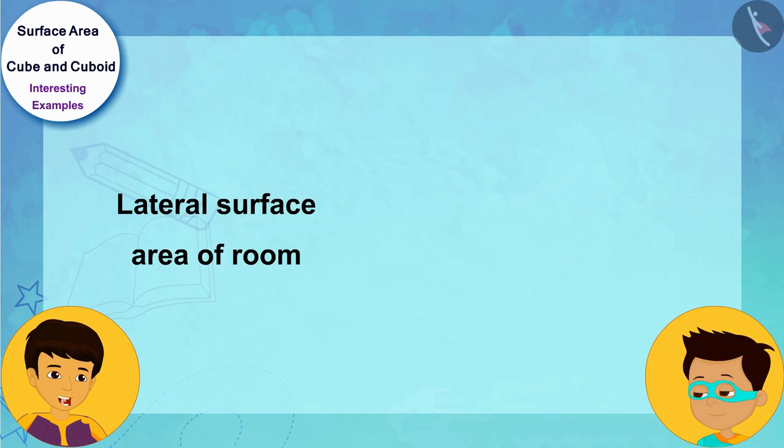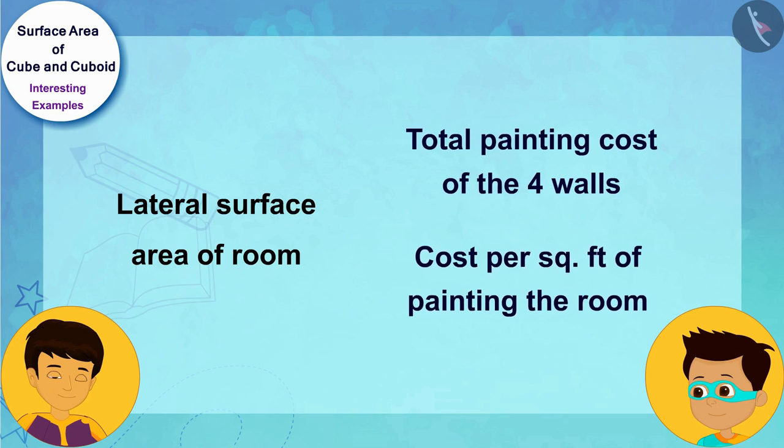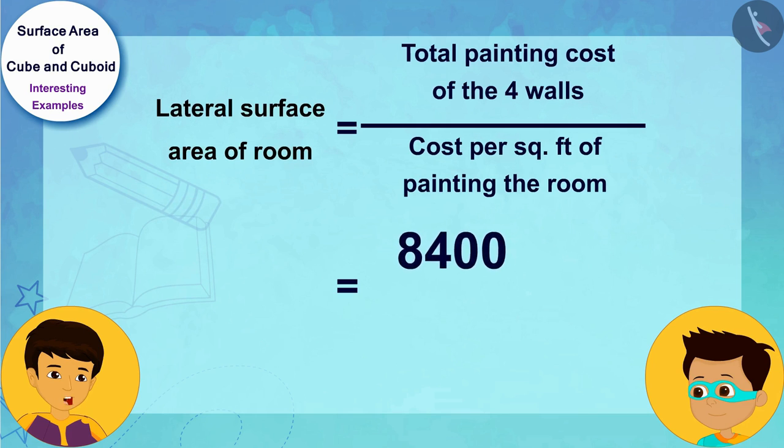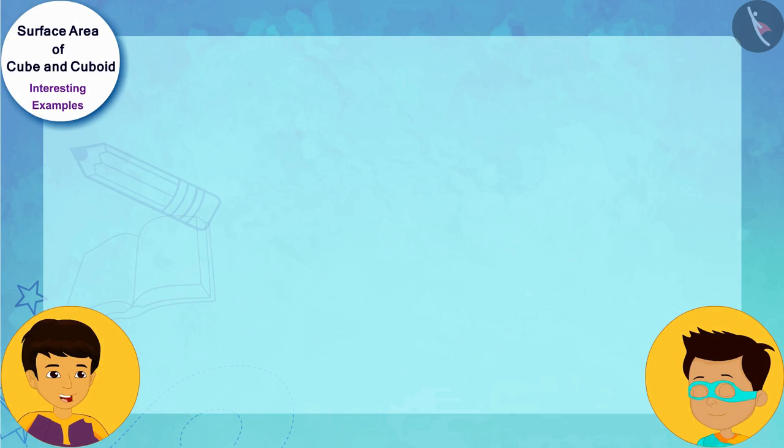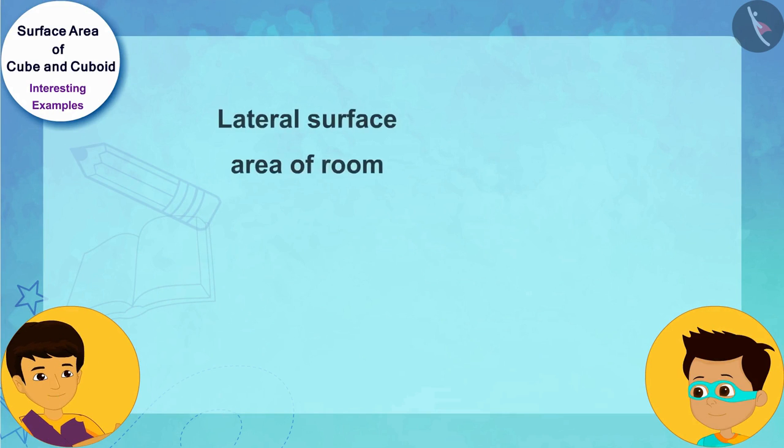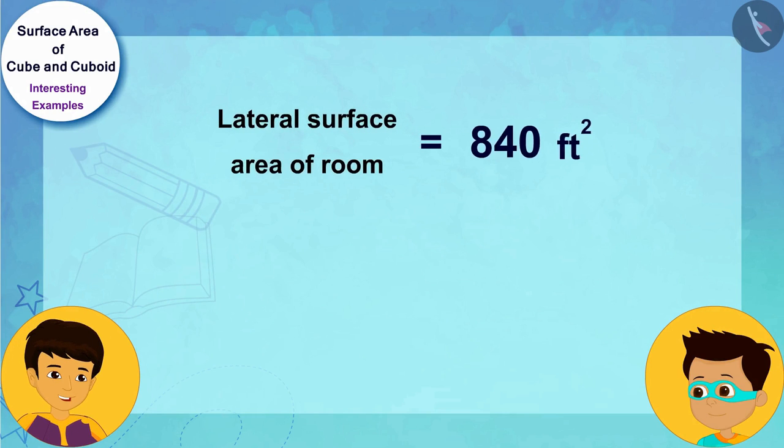Therefore the lateral surface area of this cuboid room is 8400 divided by 10, or 840 square feet. Hey wow, now it has become very easy! We know the lateral surface area of the room and its length and width are also known. Now we can easily find the height of this room.